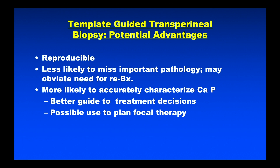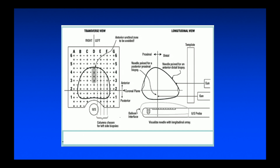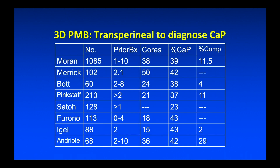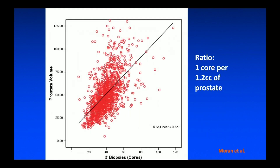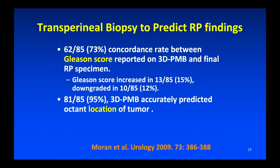Over the years, everybody recognized that, and there were some early efforts to do transperineal grid biopsies in an effort to find the cancer — and we did. Even in heavily pre-biopsied populations, with up to 10 previous sessions of transfecal random biopsies, you could still find a significant amount of cancer in those prostates. Brian Moran, a radiation therapist outside of Chicago, has written quite extensively on this. To maximize detection, you would have to take one core per 1.2 cc's of prostate, which results in a lot of biopsies, but it gives you information about the real Gleason score and which octant of the prostate the cancer is located in.